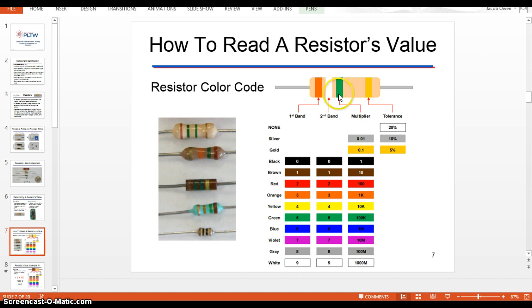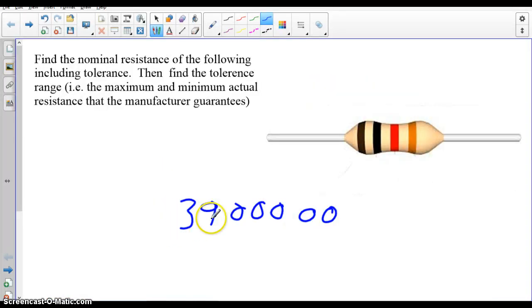So, three, nine, and then five zeros. And the unit of measurement for resistance is ohms.